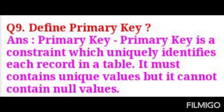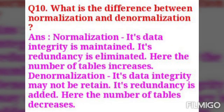The next question is: define primary key. A primary key is a constraint which uniquely identifies each record in a table. It must contain unique values but it cannot contain null values.